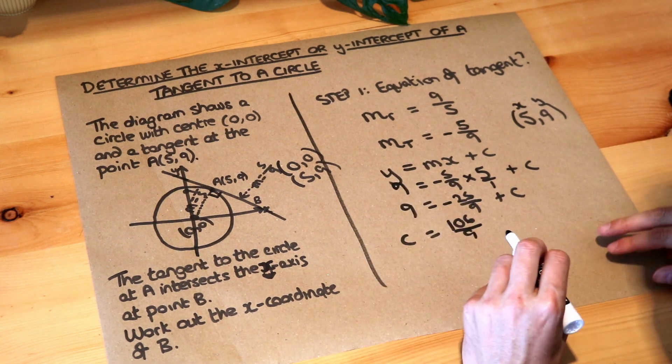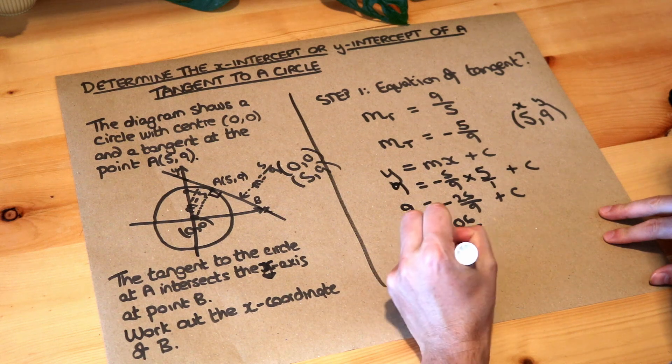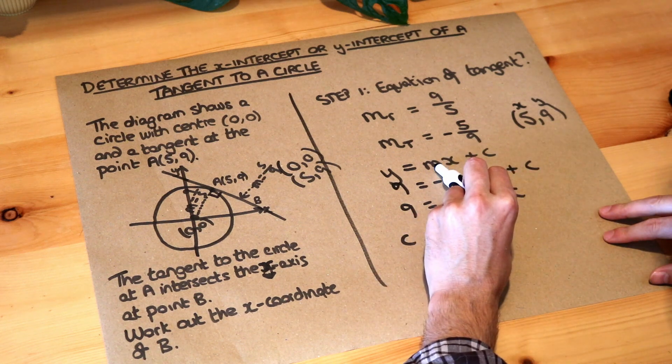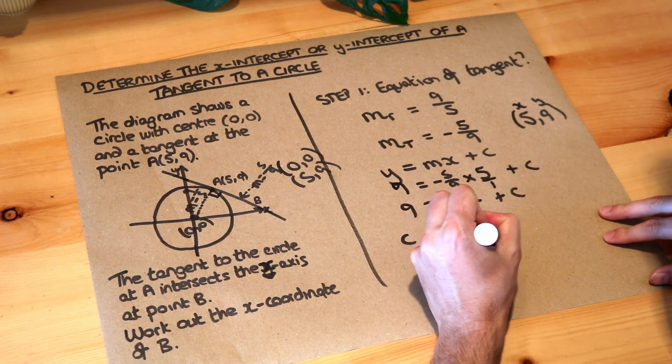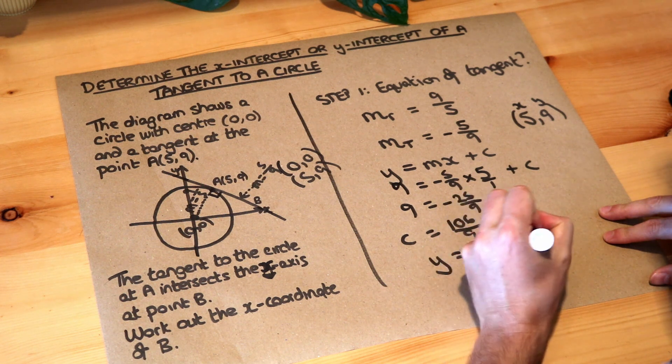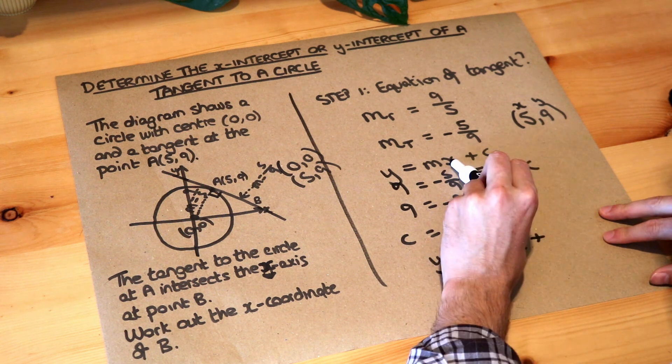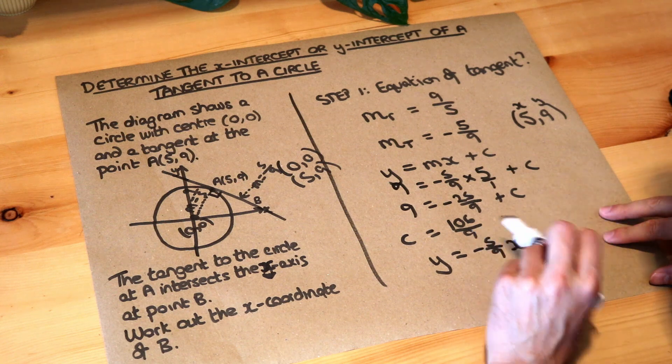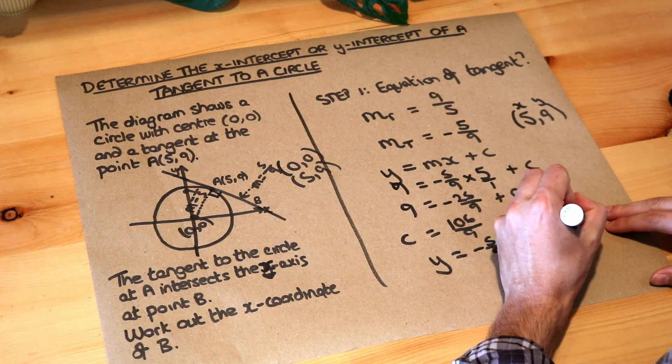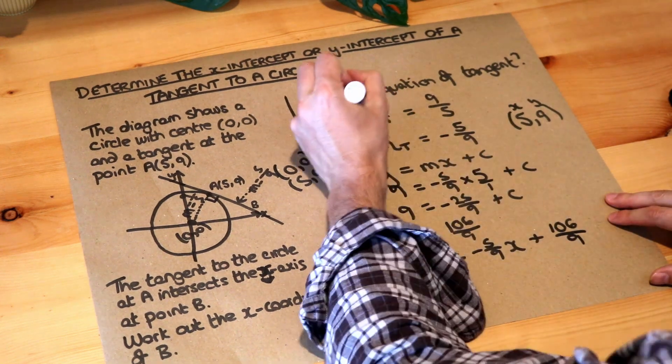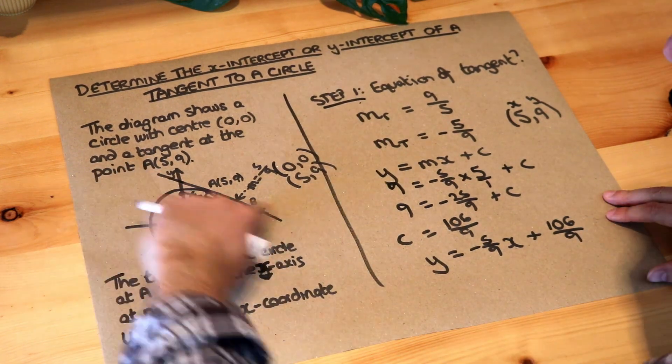So we now know that the equation of the tangent is y equals the gradient, which we knew is minus 5/9, x plus the c, mx plus c, the c we worked out is 106 over 9. Okay, so we've done step 1, found the equation of this line here.